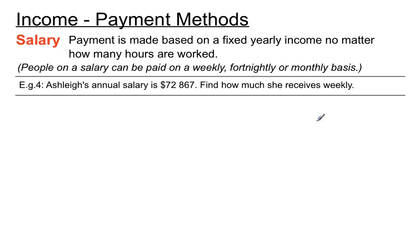So questions you'll get on that are a little bit more straightforward than that last example. Ashley's annual salary is $72,867. Find out how much she receives weekly. Now, how we do this depends on whether we quote a year as 52 weeks or you might have 52.2 or 52.18. The textbook sometimes or the question sometimes asks you to use a certain version of a year. For this purpose we'll just use 52.